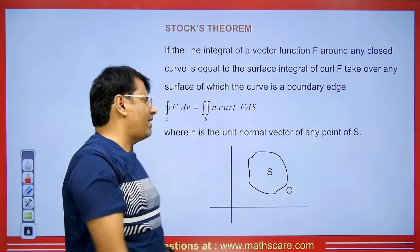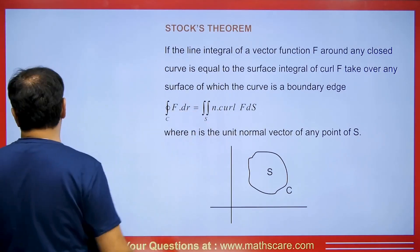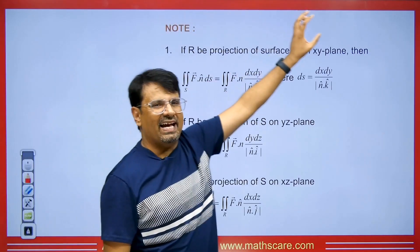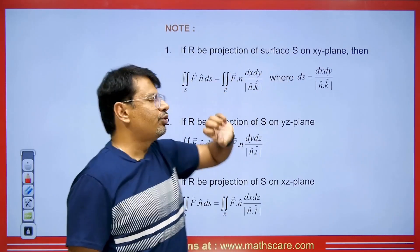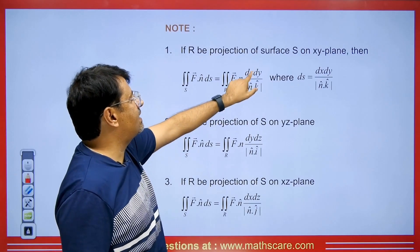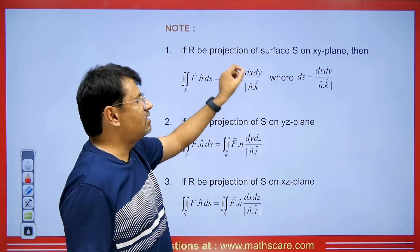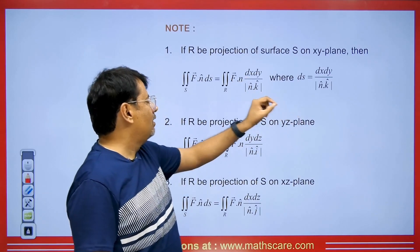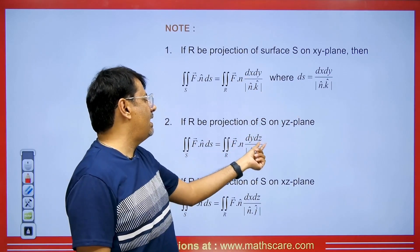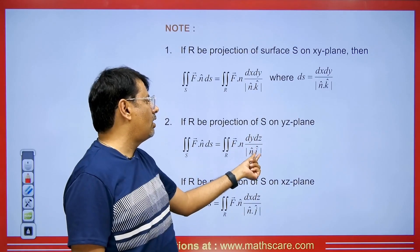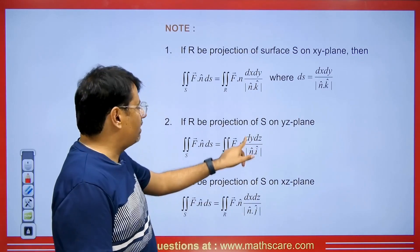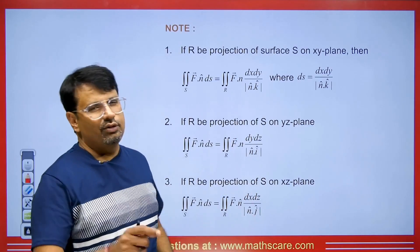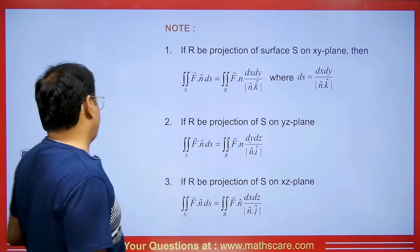I will revise the surface integral concept a little. Students might get problems while choosing ds. If we have an xy plane, we take ds as dx dy upon n dot k, where n is our unit normal vector. If we have a yz plane, we take ds as dy dz and n dot comes as i. If there is no x, it is i; if no y, then j.